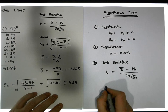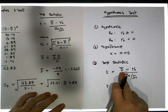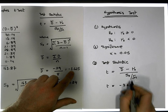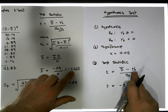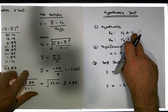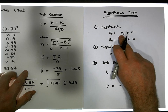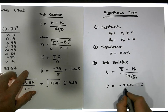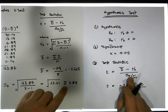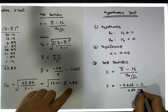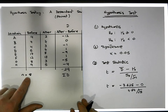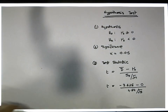We've already calculated these values. The average difference from the evidence is minus 3.625, and we take away the hypothesized difference of zero. We divide by the standard deviation of 4.84 over the square root of the sample size, which is 8.